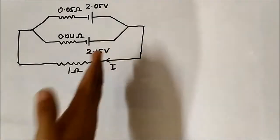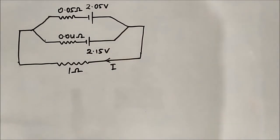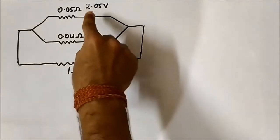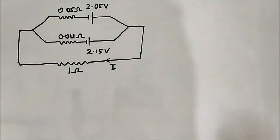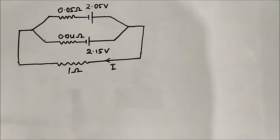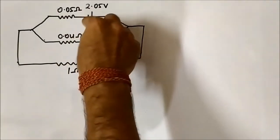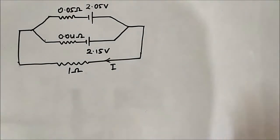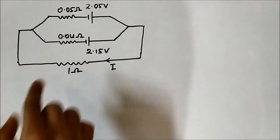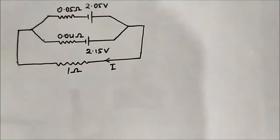As there are two voltage sources, it will take two steps. First, we consider the 2.05 volt and short circuit the 2.15 volt. Then we consider the 2.15 volt and short circuit the 2.04 volt. We determine the current through the 1 ohm resistor in each of the two cases.